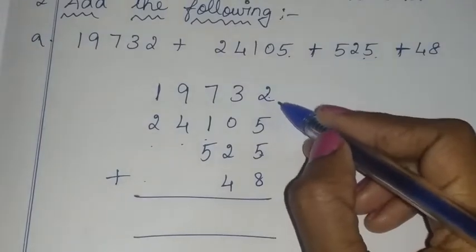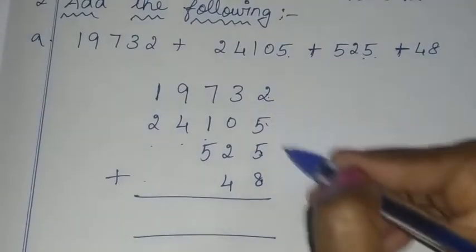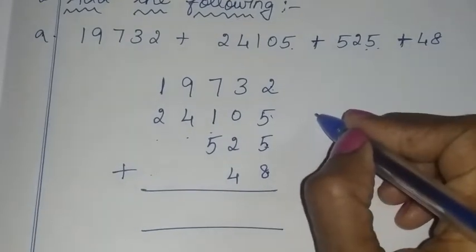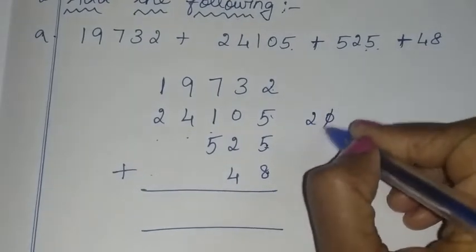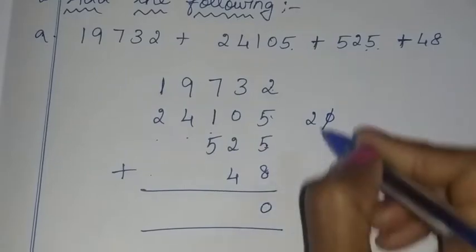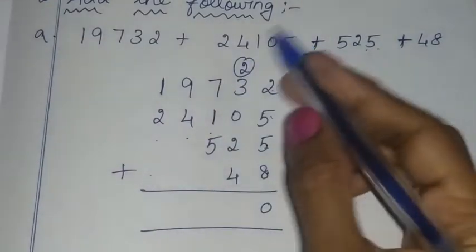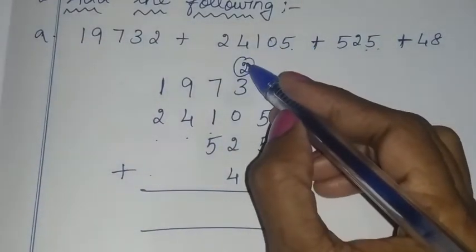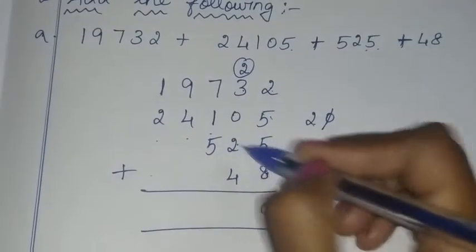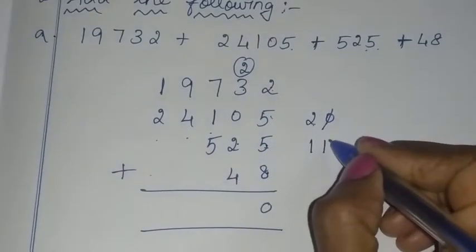Now, if you want to add this the easy way: 8 plus 2 is 10, 5 plus 5 is 10, so 20. 20 is a two-digit number. So if you want to get the ones place number, you carry over 2. Add from the carry-over: 2 plus 3 is 5, 5 plus 2 is 7, and 7 plus 4 is 11 — again a two-digit number.